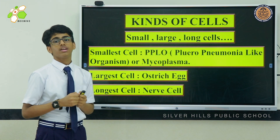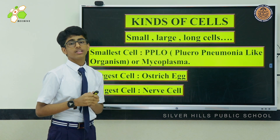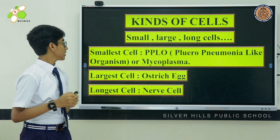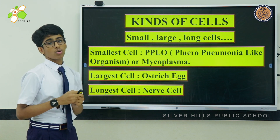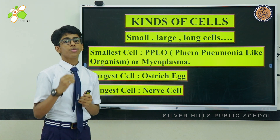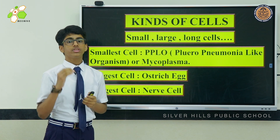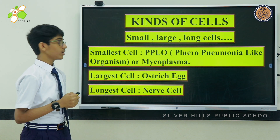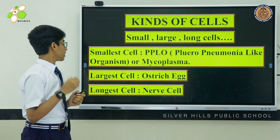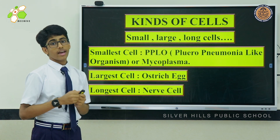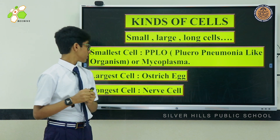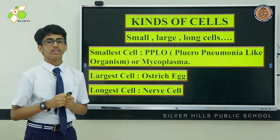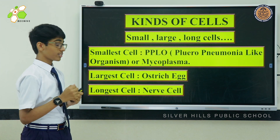Kinds of cell. Cells are classified into three types on the basis of their size. PPLO — that is pleuro-pneumonia-like organisms, also known as mycoplasma — is the smallest cell. The largest cell is an ostrich egg. The nerve cell present in the human body is the longest cell.